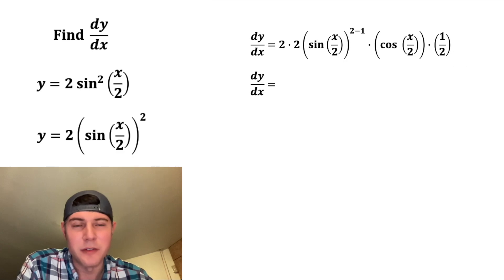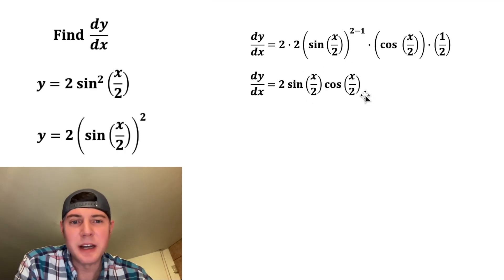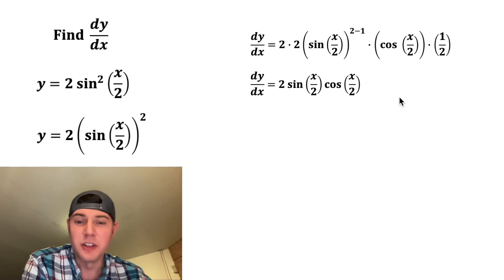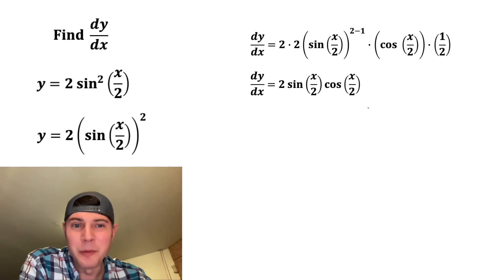Let's clean up this derivative. 1 half times one of these 2s just goes away, so we're just left with a single 2. 2 minus 1 is just 1, so this is just sine x over 2. And then we can bring down the cosine of x over 2. So this is a great answer. And if you stop here, I would probably give you full credit on a test. But I want to show you something cool.